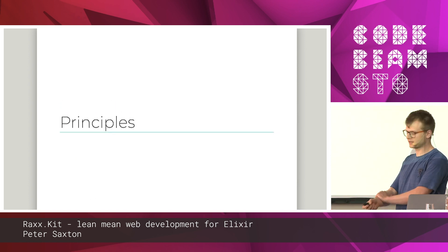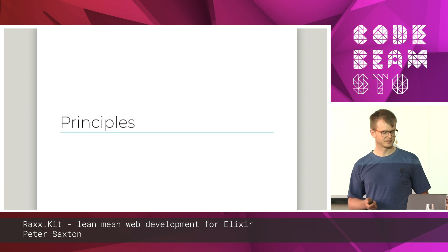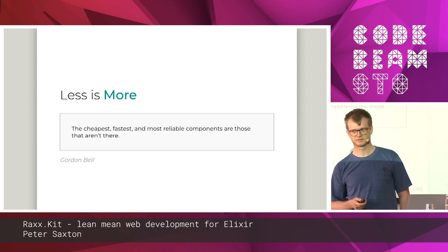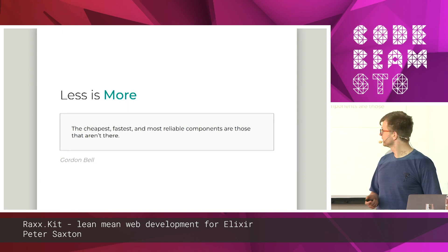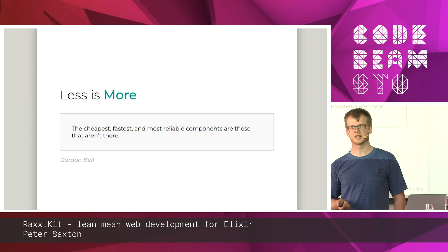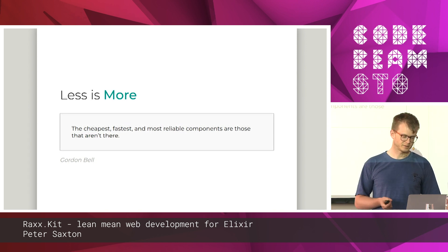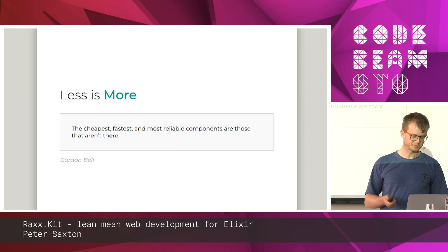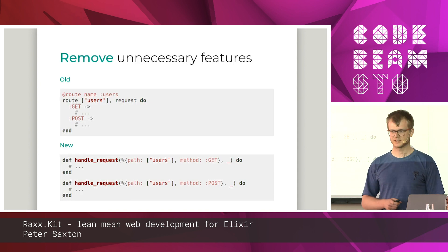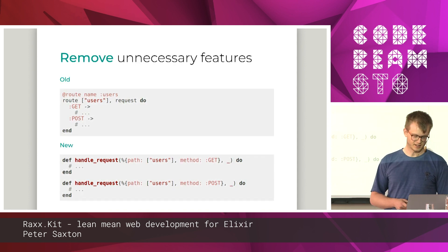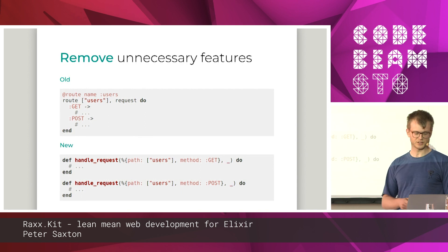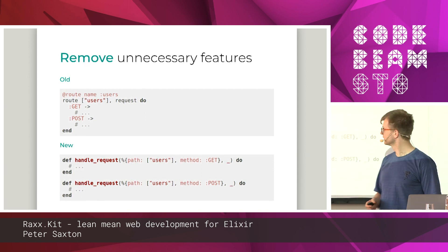Where does this lead to? The principles of Raxx and RaxxKit are as follows. The first one I like is less is more: the cheapest, fastest, most reliable components are those that are not there. This is the exact opposite of batteries included. The idea is we are optimizing for long-term productivity. There are less things in the system that can get out of date as versions update, and less things you might only discover later on.